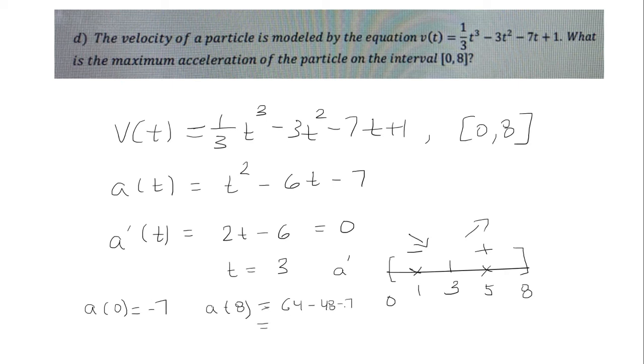Negative 48 minus 7 is negative 56. Sorry, negative 55. And then 64, so 64 minus 55 is 9. So clearly the maximum acceleration is 9, and that is our answer.